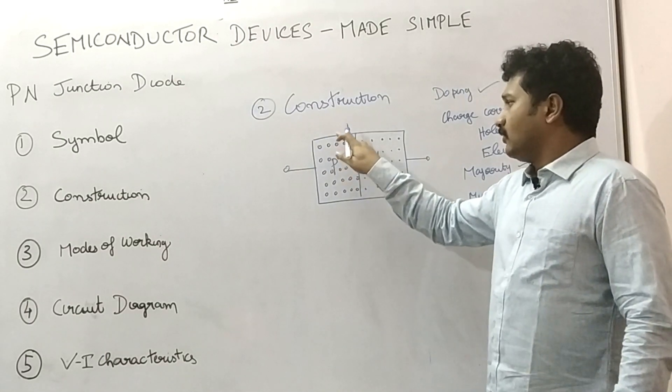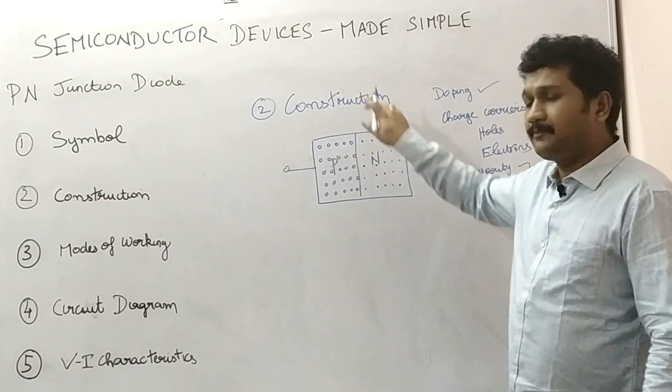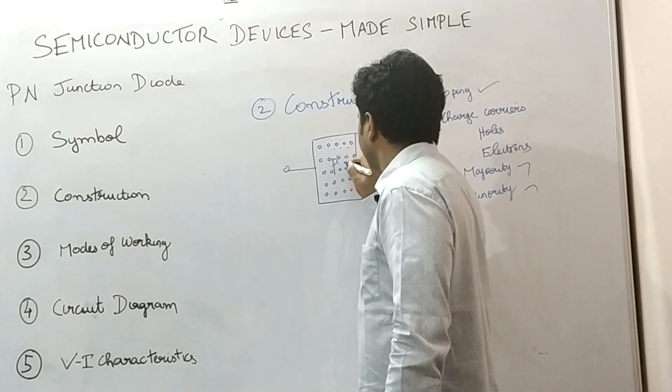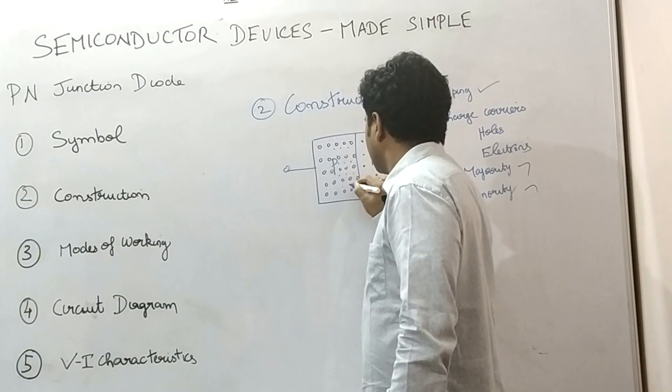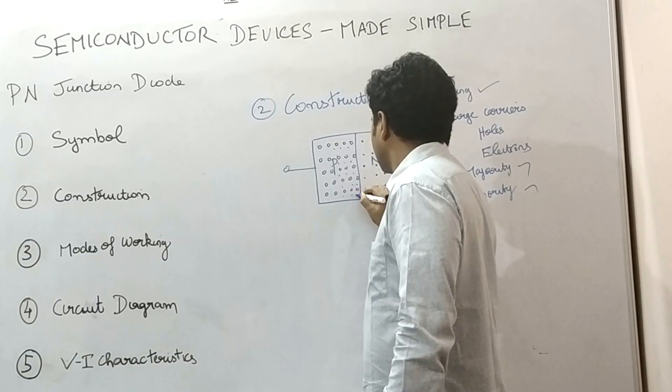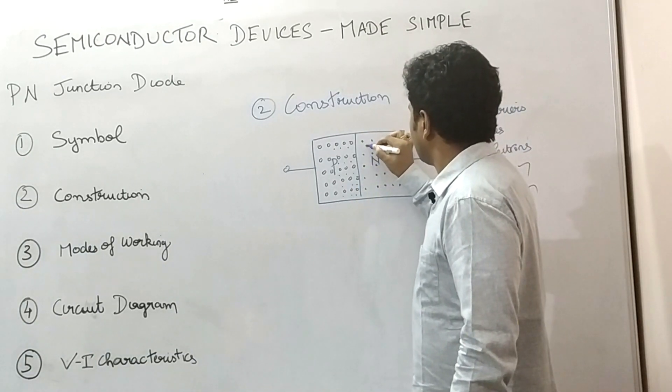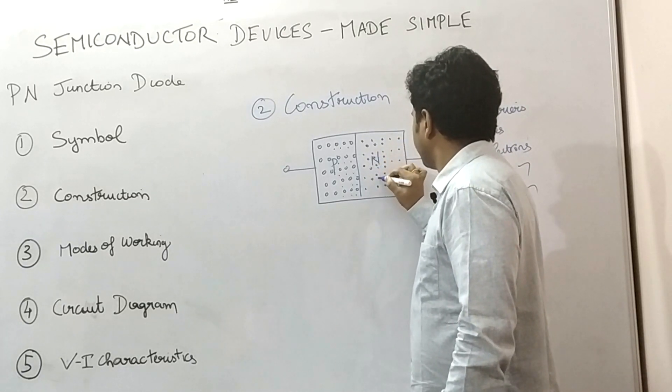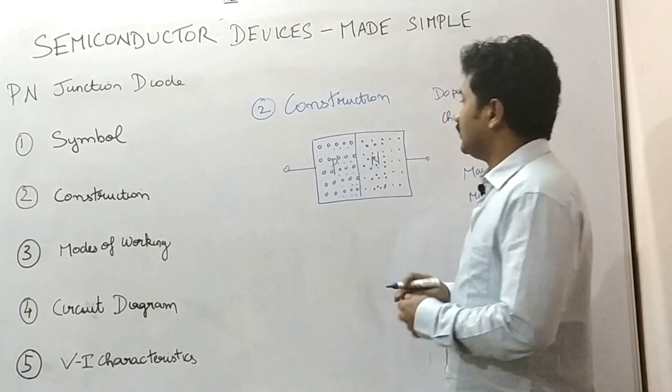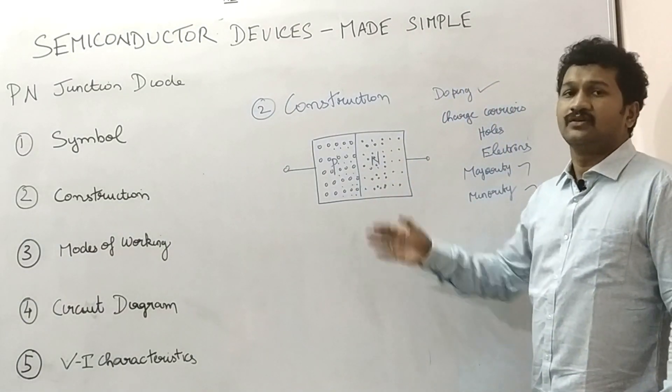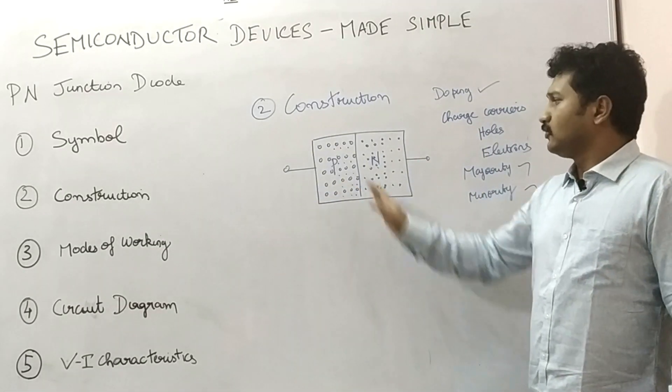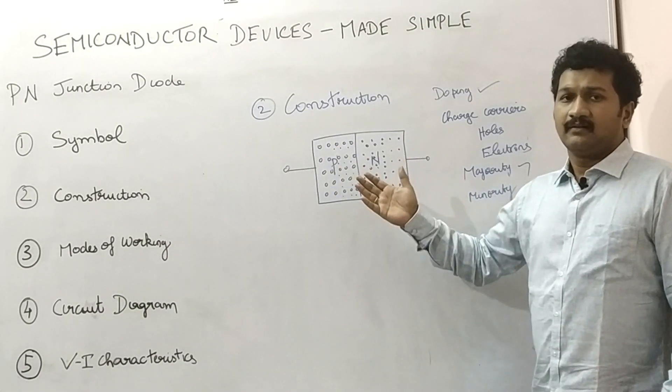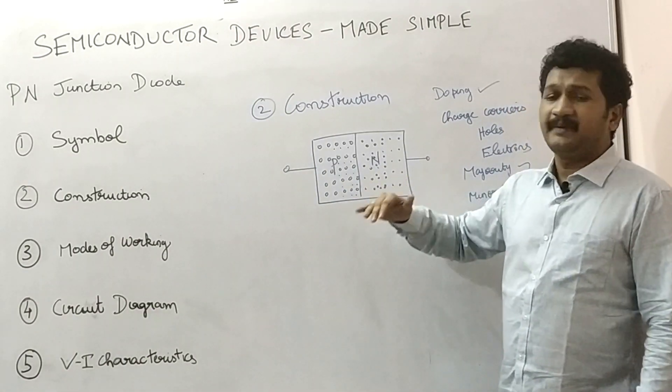As I said, holes are majority charge carriers in the P layer. There will be minority charge carriers. Some amount of minority charge carriers. Here, holes will be the minority charge carriers. Usually in PN junction diodes, doping will be uniform in both layers. P layer and N layer will be doped by equal amount of majority charge carriers on both sides. In simple, this is the construction of a PN junction diode.